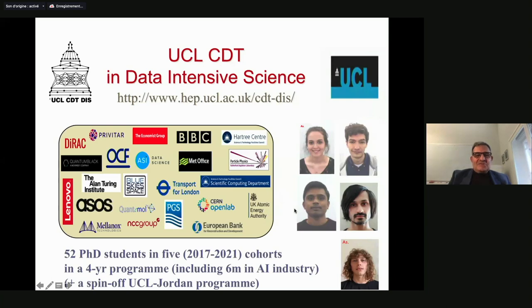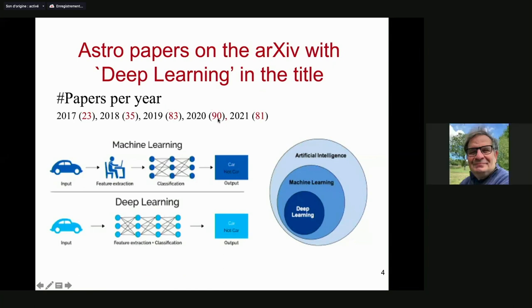There's not only an explosion of the number of papers on machine learning in general, but specifically on deep learning. I looked up 'deep learning' in the title on the archive, and we're at the level where someone in the world writes a paper with 'deep learning' in the title every once or twice a week. The old way of doing it was to extract features from an image, feed it into a shallow network, and tell whether it's a car or not a car. In deep learning, we feed in the whole image — this was the breakthrough. Computer scientists tell me they still don't quite understand why deep learning is working so well. There are some papers about it, but I think there's still no textbook solution.